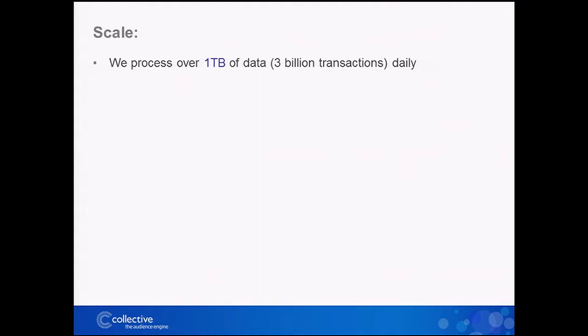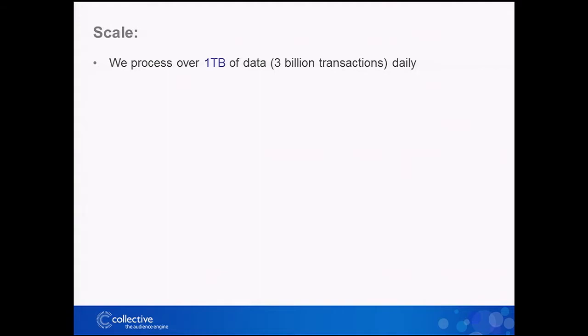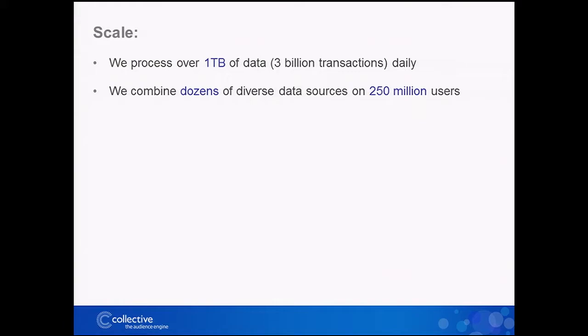On scale: we process over one terabyte of structured data every single day — about three billion transactions. Beyond that, it's very diverse data. We're literally working with dozens of different fundamental types of data sources, integrating them together to create a single unified view of the consumer across around 250 million stable users. We're building predictive models, trying to identify who is going to take a specific action, and building thousands of those predictive models every week. Each model lasts at most a week before we rebuild it.